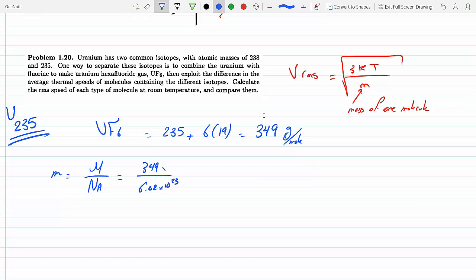This here is in grams, so I would have to change it to kilograms, so I multiply it by 10 to the minus 3. This gives me 5.79 times 10 to the minus 25 kilograms per mole.